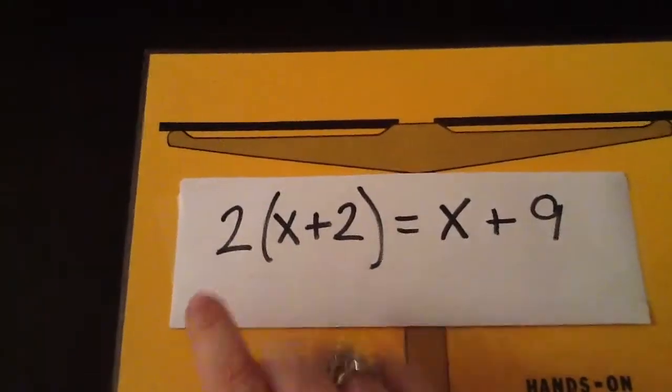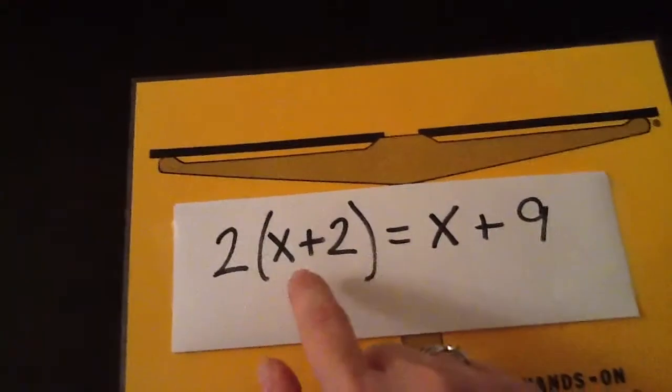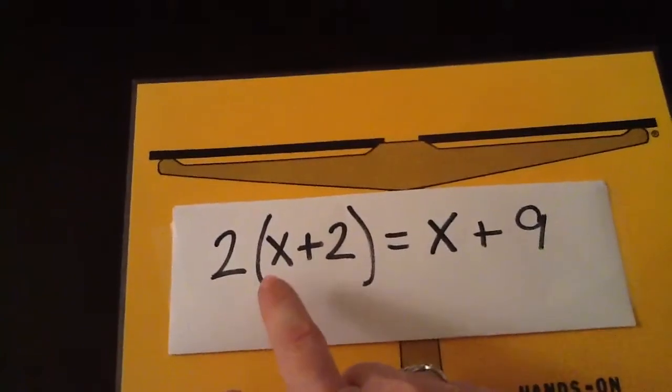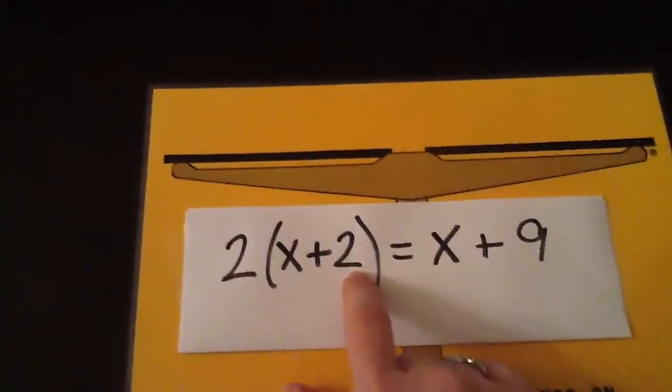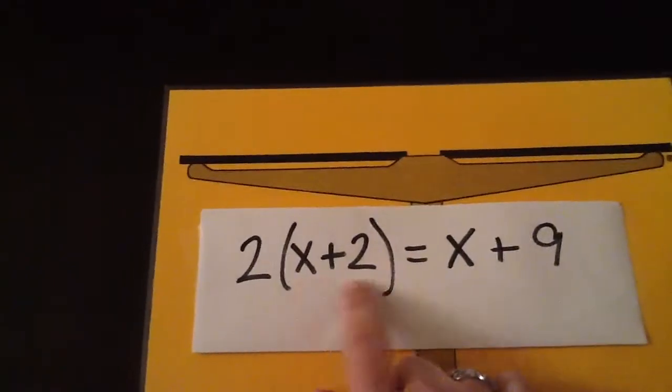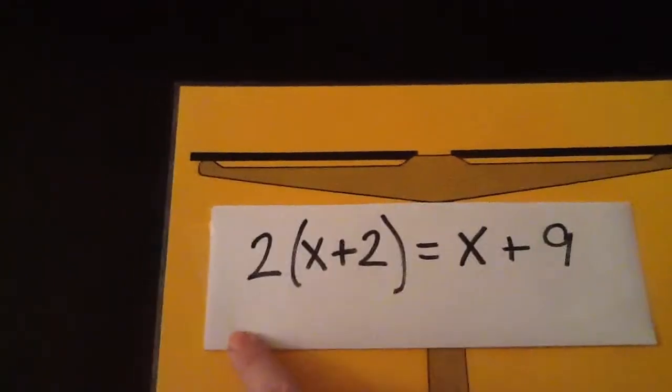In this problem we have 2 and then what we know is multiplication, 2 times x plus 2. So what we're going to do is take what's inside the parentheses and we're going to put down 2 of them.